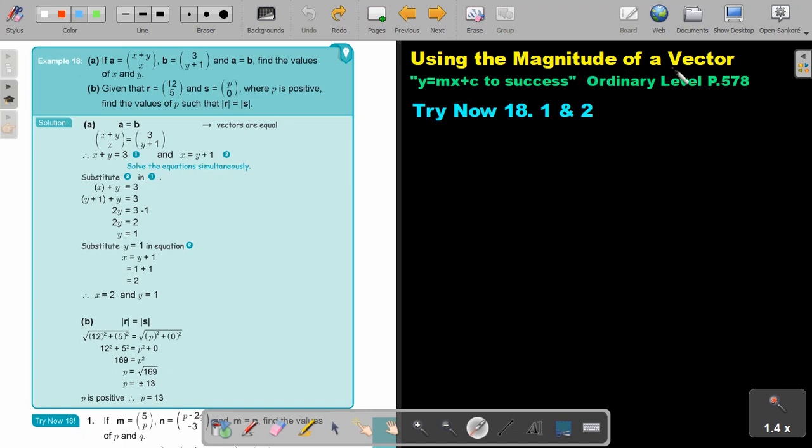Using the magnitude of a vector, for example, to find an unknown. You will find this on page 578 in the Namibia Ordinary Level Mathematics Textbook, Y equals MX plus C to success.